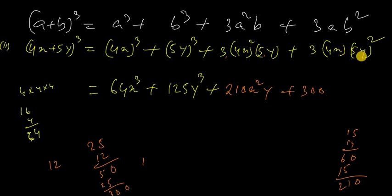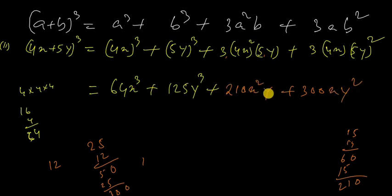In terms of x and y: we have x cubed, y cubed, x squared y, and xy squared terms. So we have x cubed, y cubed, x squared y, and y squared terms giving us the full answer.